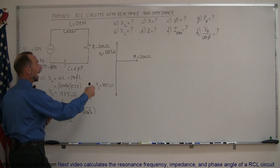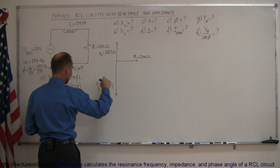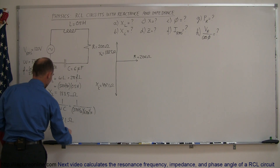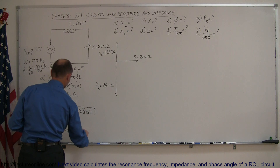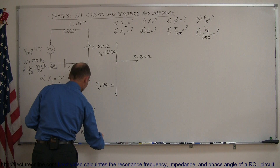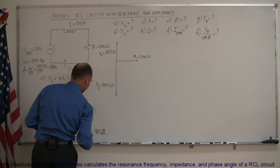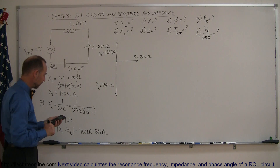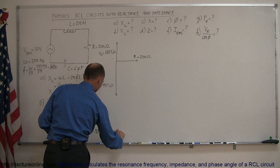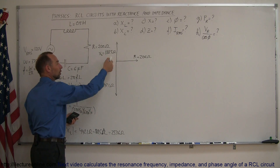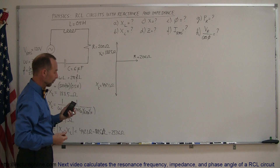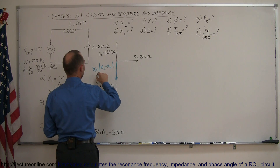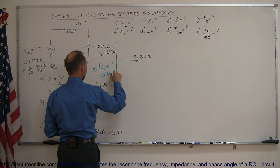Now to find the total reactance, we add these two together. Notice they're like vector quantities pointing in opposite directions. So the total reactance X equals X sub C minus X sub L, which is 442.1 ohms minus 188.5 ohms. That gives us 253.6 ohms — that's the net reactance, equal to the difference between X sub C and X sub L.